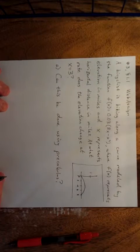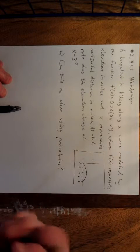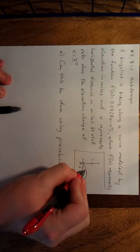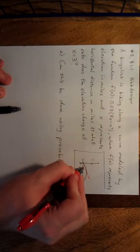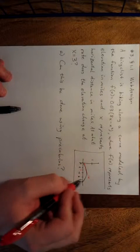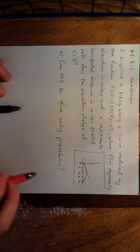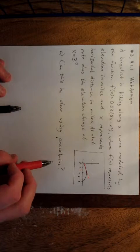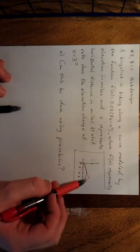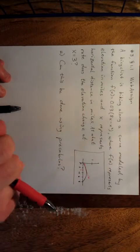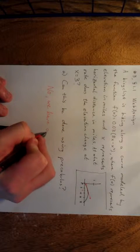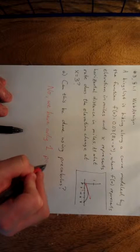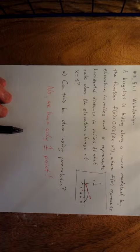Can this problem be done using only pre-calculus? We're looking for a rate of change of elevation when x equals 3. Because we're only given one point, this has to be an instantaneous rate of change. Instantaneous rates of change only give us a single point to work with. However, in pre-calculus, to find a rate of change or slope of a line, we need two points. Therefore, no — this problem cannot be done using only pre-calculus, since we have only one point.